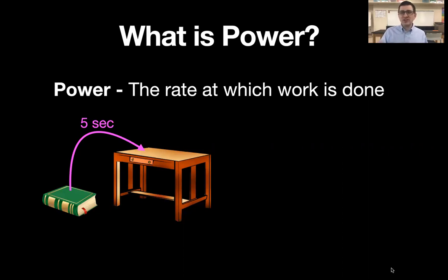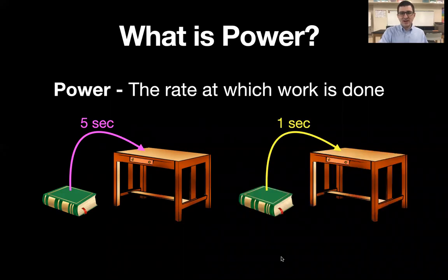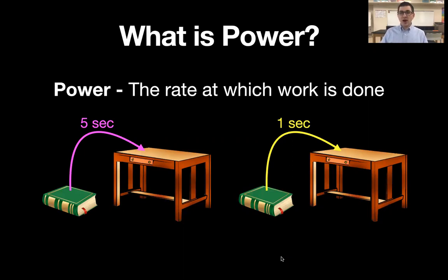Now if I do the same example again and raise the book up to the top of the table, thereby changing its gravitational potential energy — I did work on the book — but I did it in one second. That's going to require more power because I did the same amount of work in a much smaller amount of time, thereby requiring more power.